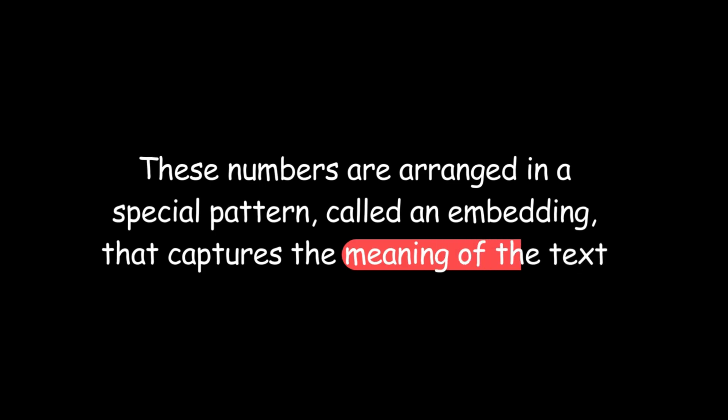You might be wondering, what does it actually do? Embedding Gemma is a text embedding model. Here is an easy way to understand it: imagine you give the AI a sentence or a piece of text. Instead of just reading it like we do, the AI converts the text into numbers, because computers understand numbers, not words. These numbers are arranged in a special pattern called an embedding that captures the meaning of the text.